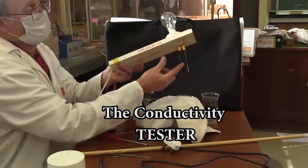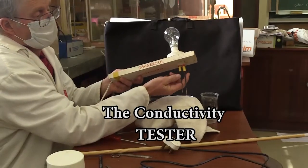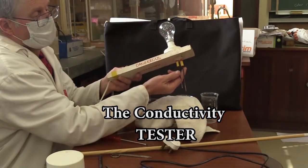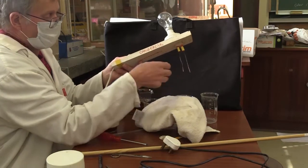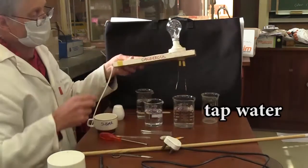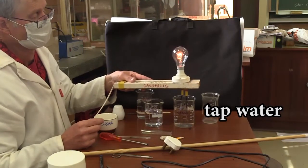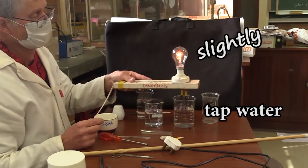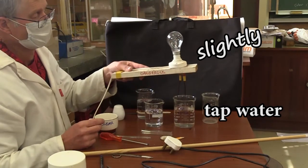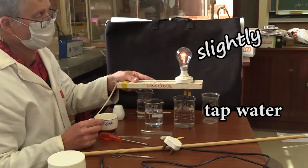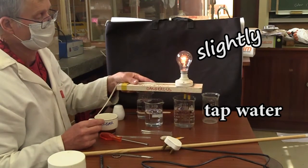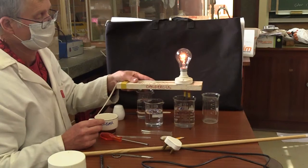So here's my conductivity tester. When you touch the terminals, we'll bridge it with a conductor when the bulb glows. Here's some tap water. As we push it in deeper, you see it conducts slightly. That's because tap water has a very low concentration of salts dissolved in it.